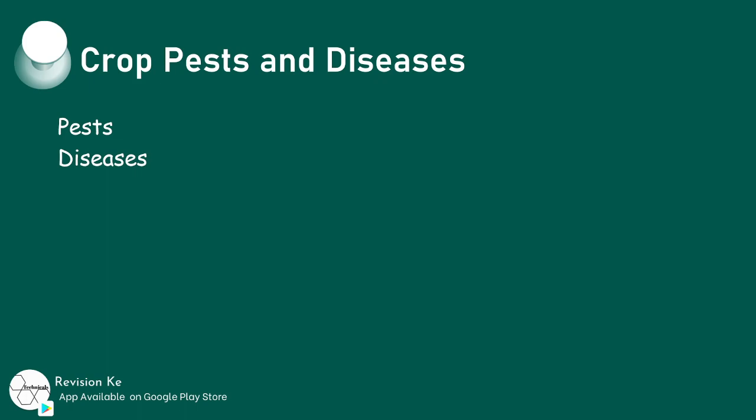The other objectives of this topic are to identify and classify some of the most common pests and diseases, and to carry out general disease and pest control measures. That will accomplish the objectives of this topic. See you in our next class.